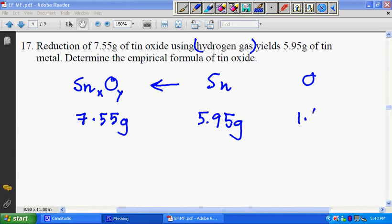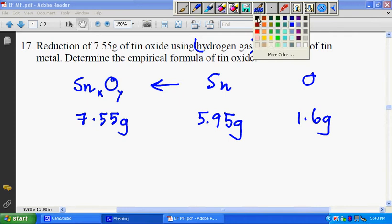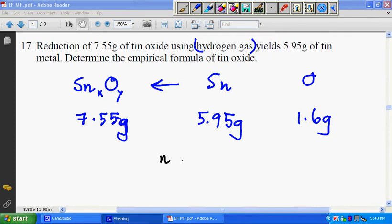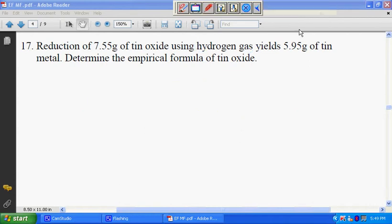Based on this you can find the number of moles. The number of moles for tin is 5.95 divided by the molar mass of tin. The molar mass of tin seems like I have to erase this page to find out the molar mass of tin. Let's look up the molar mass of tin. Should be 119.